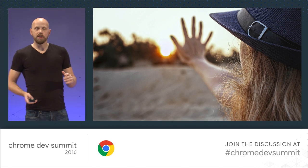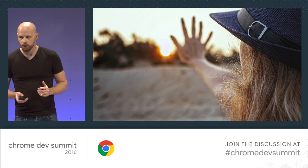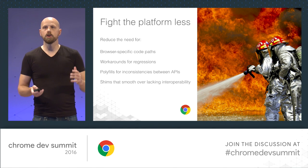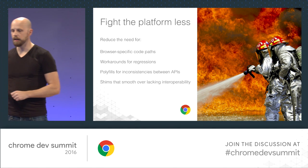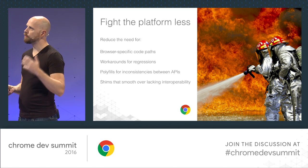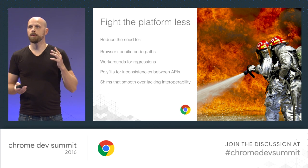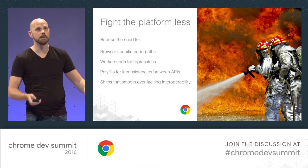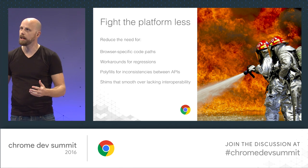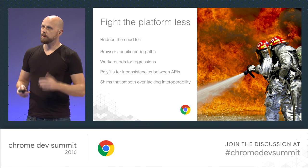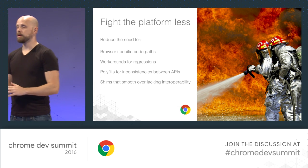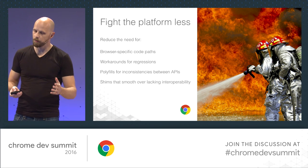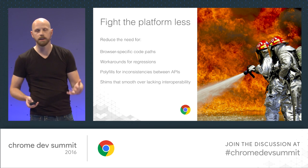There are five main areas where we want to address this. First, we want to make sure that you fight the platform less — less need for browser-specific code paths, making sure you don't have to have too many workarounds for regressions, basically things that used to work and then three months later just stop working with no idea what happened.